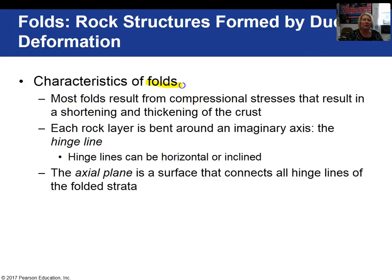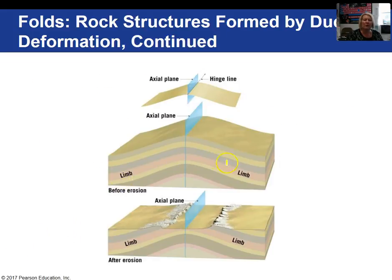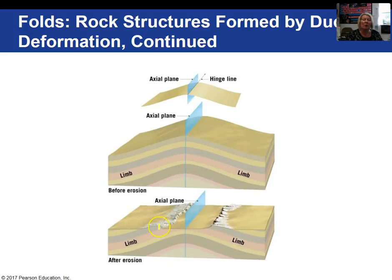The first structures we'll look at are folds. Folds are formed by compressional stress where shortening and thickening of the crust occurs. There are different parts of a fold — we can identify the hinge line and the axial plane. The hinge line runs along the area of maximum bending. On either side of the hinge line are the limbs. After erosion, this block diagram shows what a fold looks like underground and in map view at the surface.